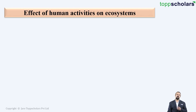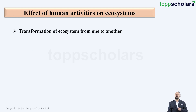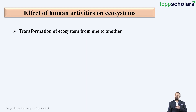Let us go through the various effects these human activities are having on the ecosystem. Due to these human activities, the ecosystem actually transforms from one into another. For example, today where there is a grassland or a forest, maybe in a few hours that area might be covered with concrete buildings.